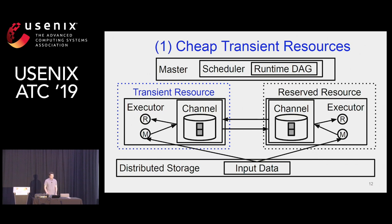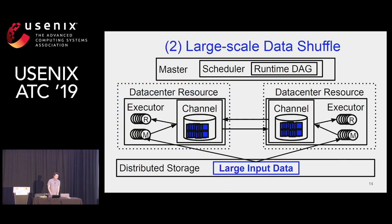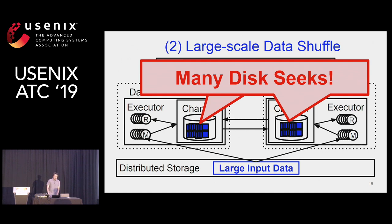Let's consider using cheap transient resources. Suppose one of the executors is running on transient resources. The problem with these resources is that they are cheap but also frequently evicted, and this causes a lot of recomputations that degrade performance. And with large-scale data shuffle, we have many map and reduce vertices, which naturally leads to many data partitions that need to be shuffled, and shuffling a lot of these partitions causes many disk seeks that degrade performance.